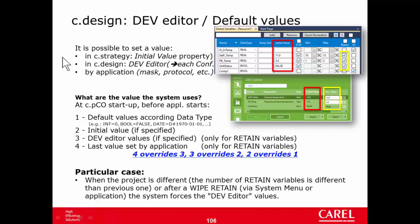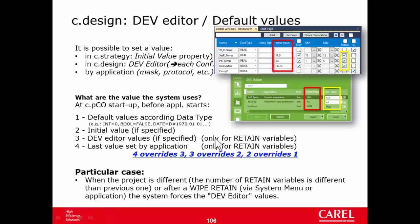So here you see only the variables that are in retain. Then by application — for example, we can change the setpoint in the mask. In the previous exercise we also changed it via protocol, via Modbus Master/Slave. So there are three ways. At startup, before the application starts, all variables take a value that depends on the data type — in general it's zero for all boolean, integer, and real variables. After that they take the initial value if specified, then the DEV Editor value if specified — available only for retain variables.